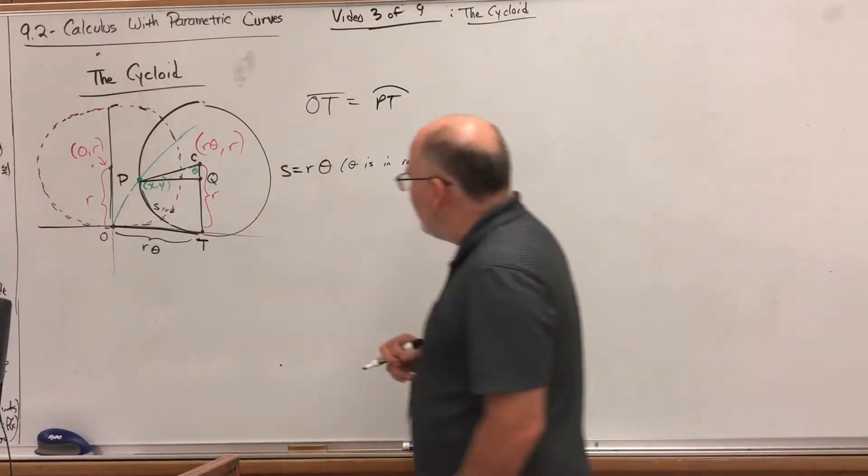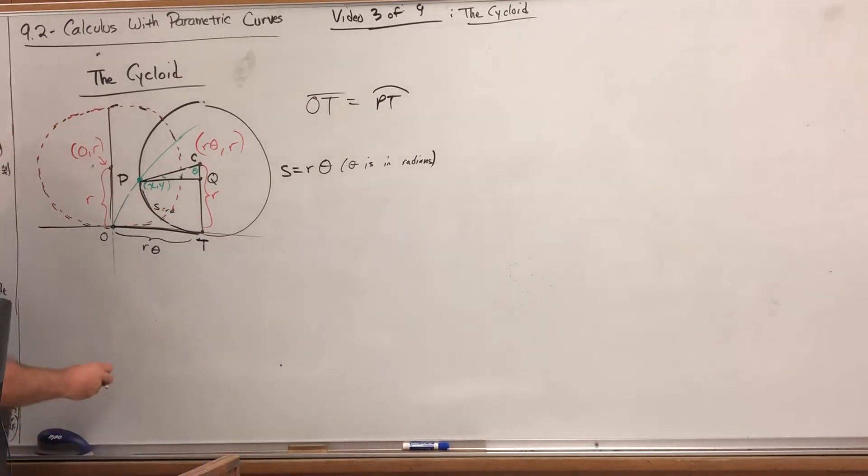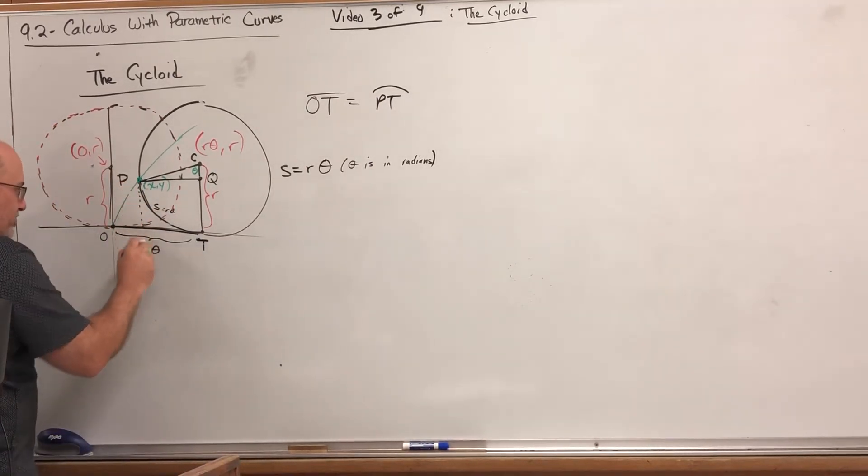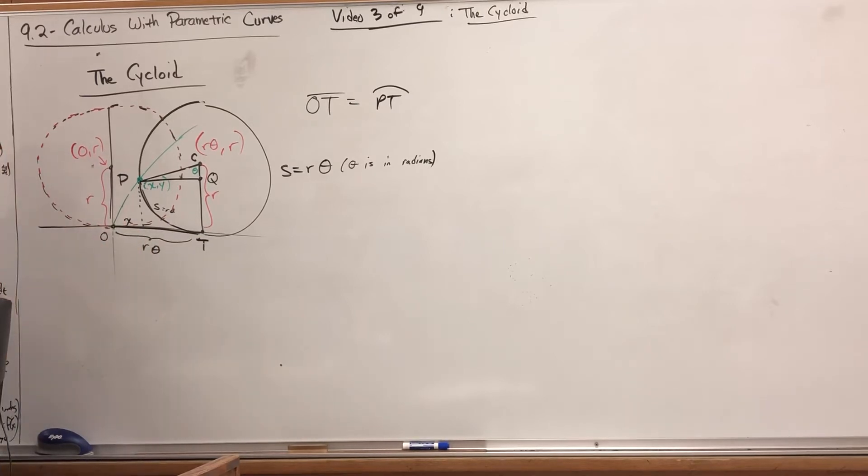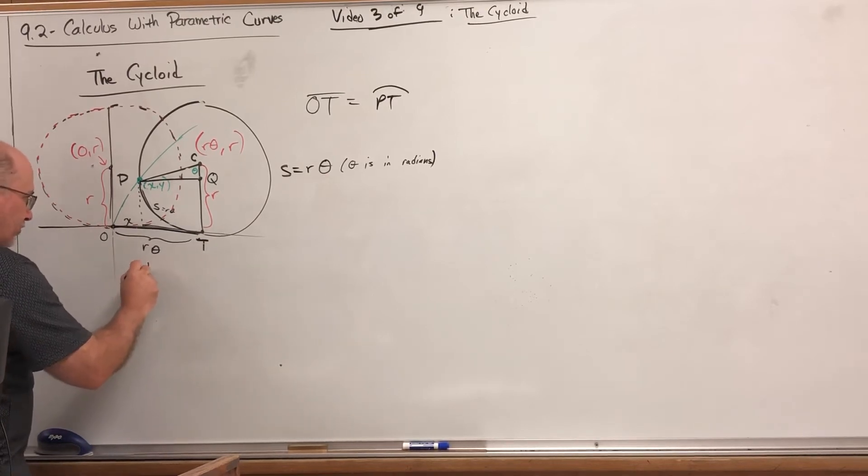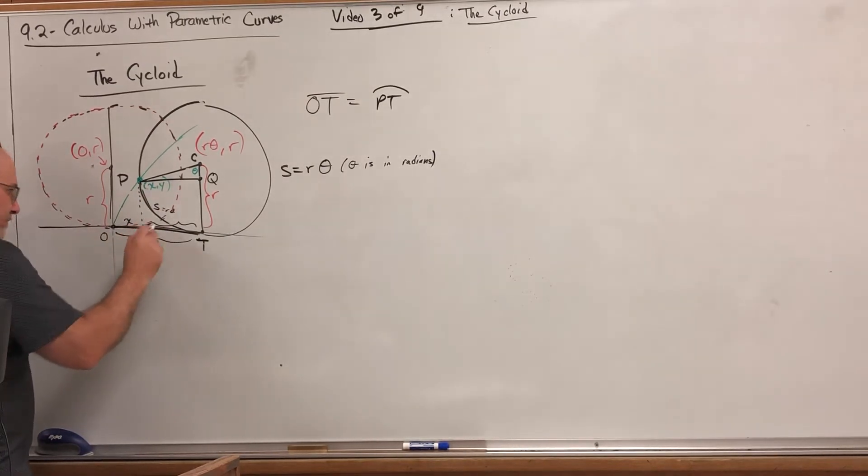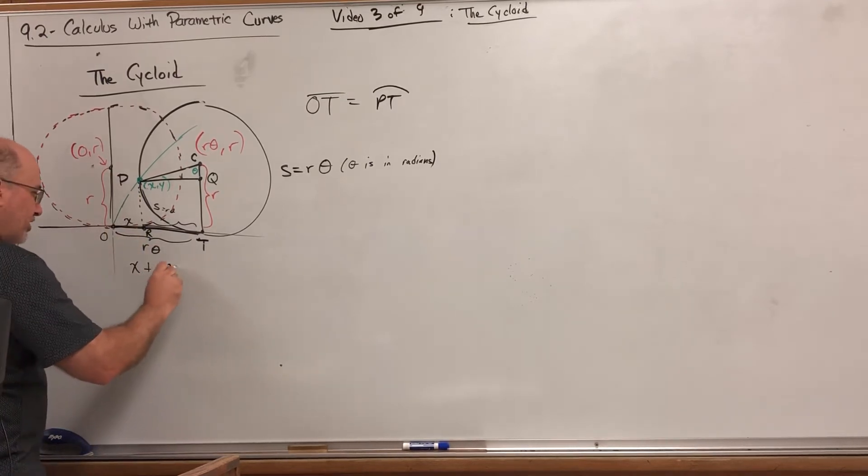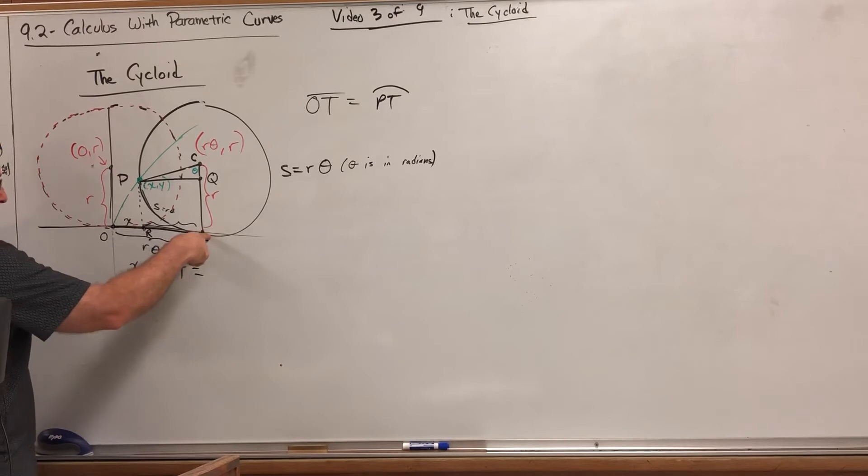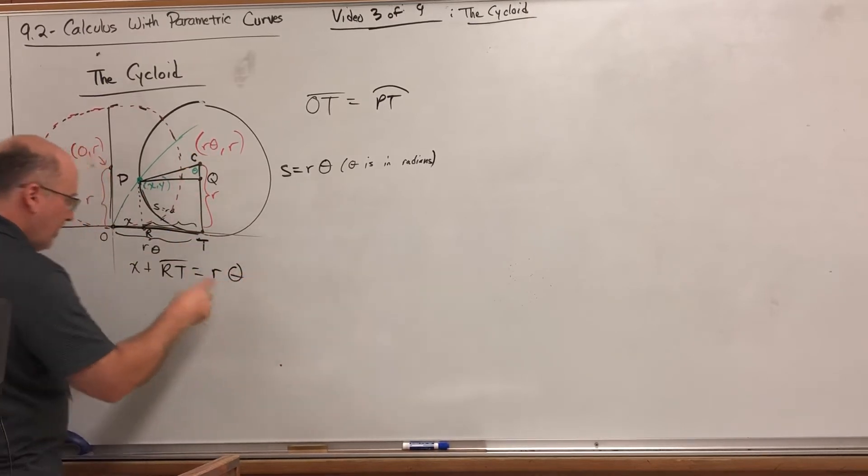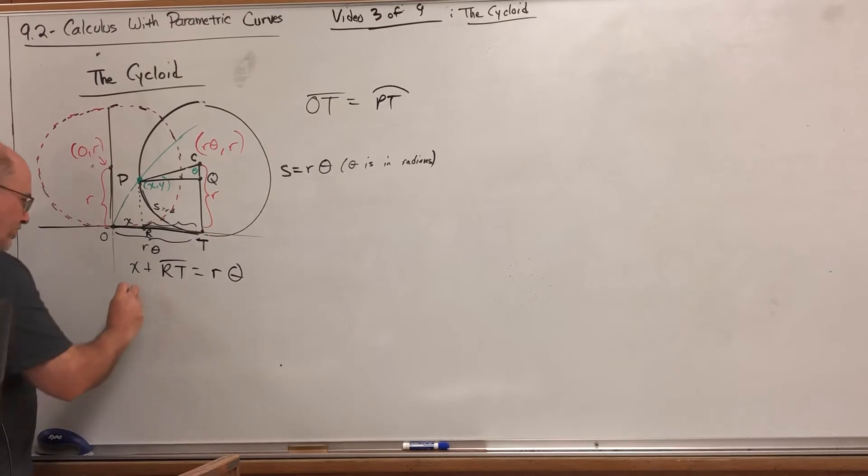The first observation is about this x-coordinate. If you project it down to the x-axis, it's simply right here. So we know x plus this is going to equal OT. In other words, x plus whatever this is—if we project point P down to the x-axis—we know x plus the length of RT has to equal the length of OT, which is r theta.